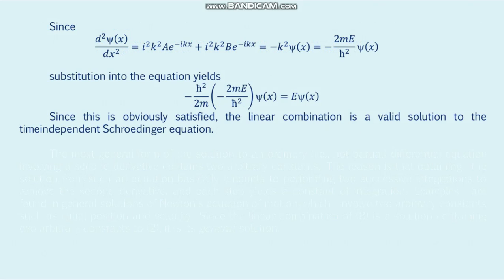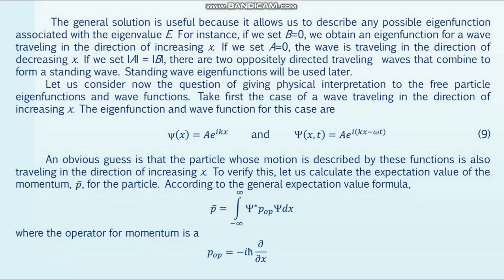To prove this, we take the linear combination ψ given by formula number 8, in which A and B are arbitrary constants, and substitute it into the time-independent Schrödinger equation formula number 2. The substitution yields the result that the linear combination is a valid solution. The general solution is useful because it describes any possible eigenfunction associated with eigenvalue E. If we set B = 0, we obtain the eigenfunction for a wave traveling in the direction of increasing x; if A = 0, the wave travels in the direction of decreasing x.